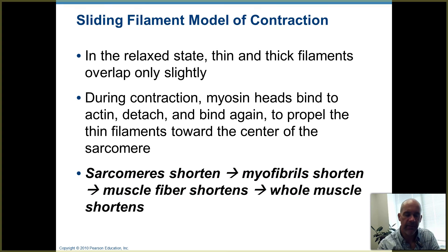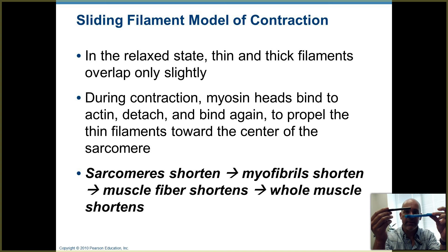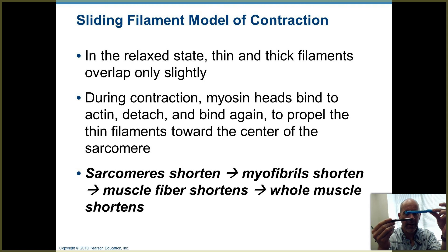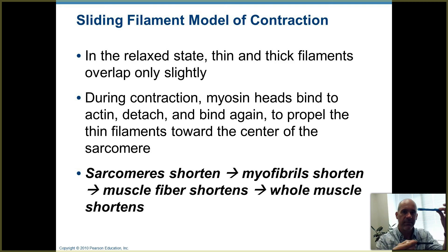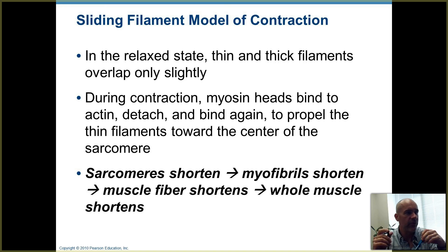When a skeletal muscle is relaxed, the thin and thick filaments overlap a little bit. The thin filament is on top, the thick one in the middle, and then another thin filament below — the thick ones are sandwiched between thin filaments. Keep in mind this is happening in three dimensions. Diagrams often look 2D, but sarcomeres, the bundles of thin and thick filaments, are actually three-dimensional structures.